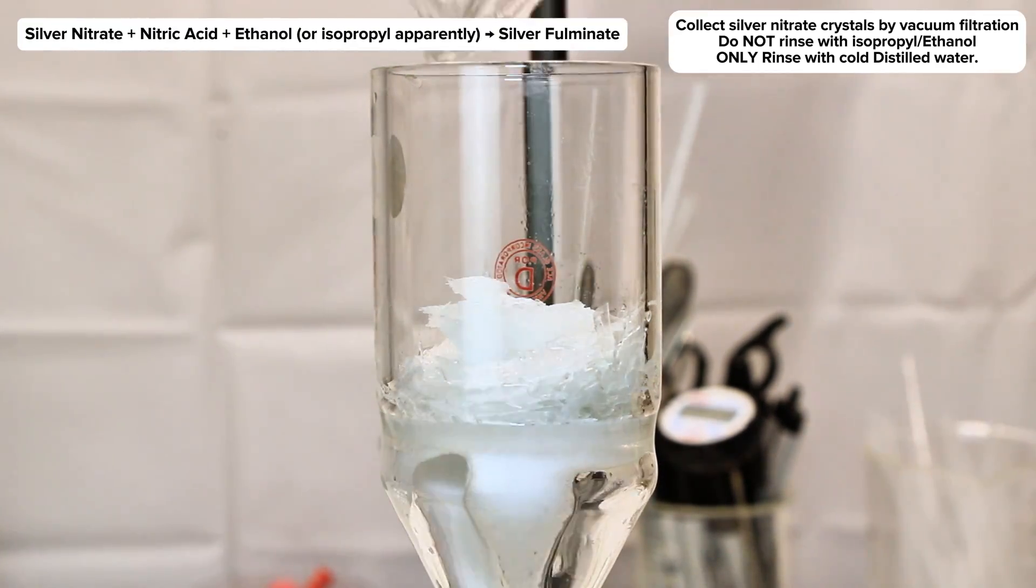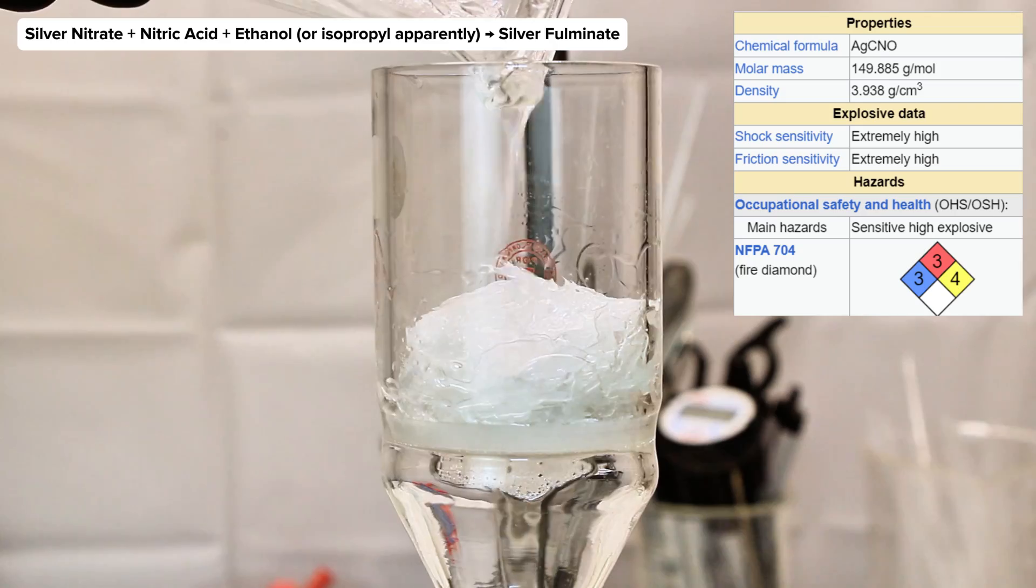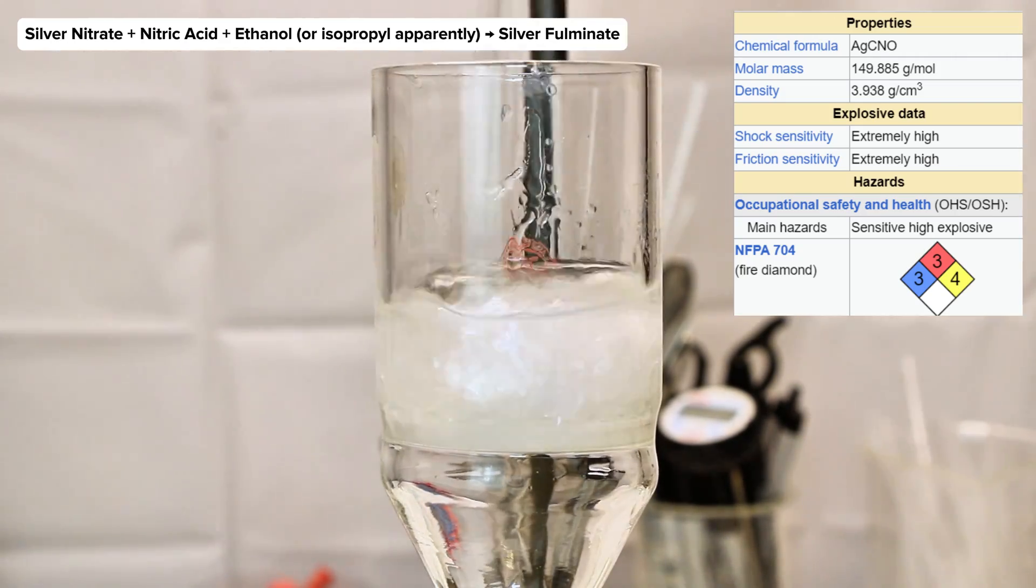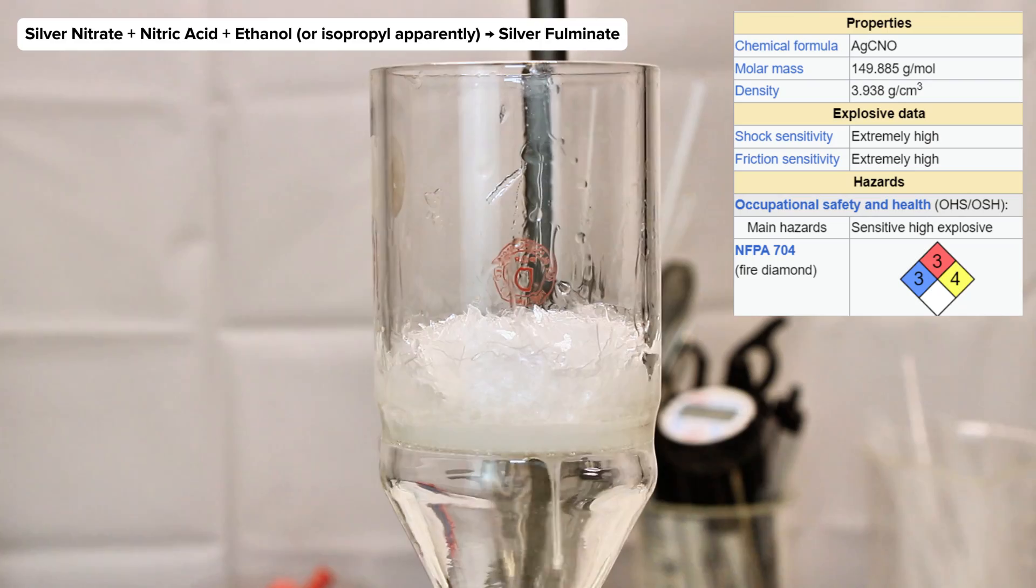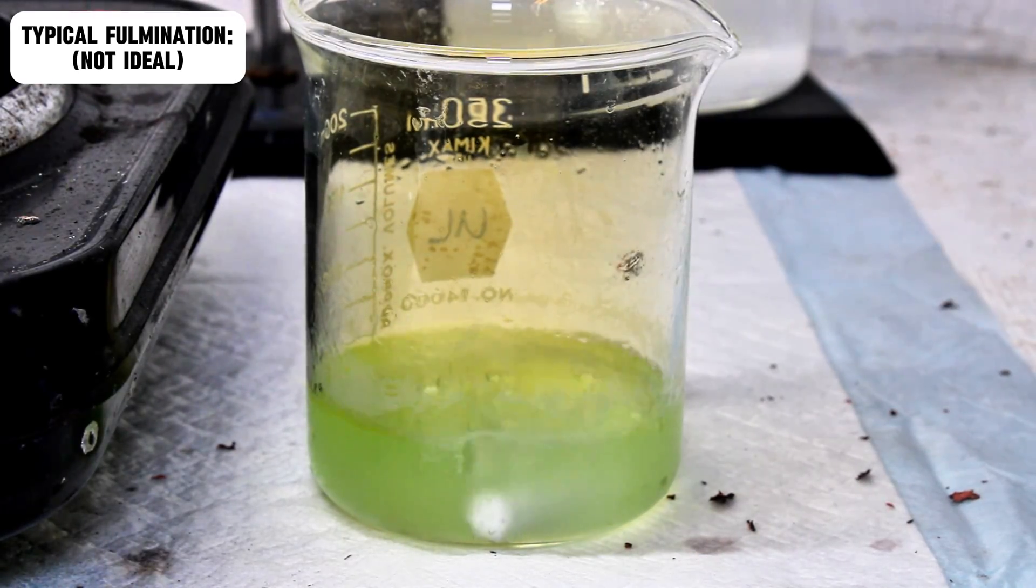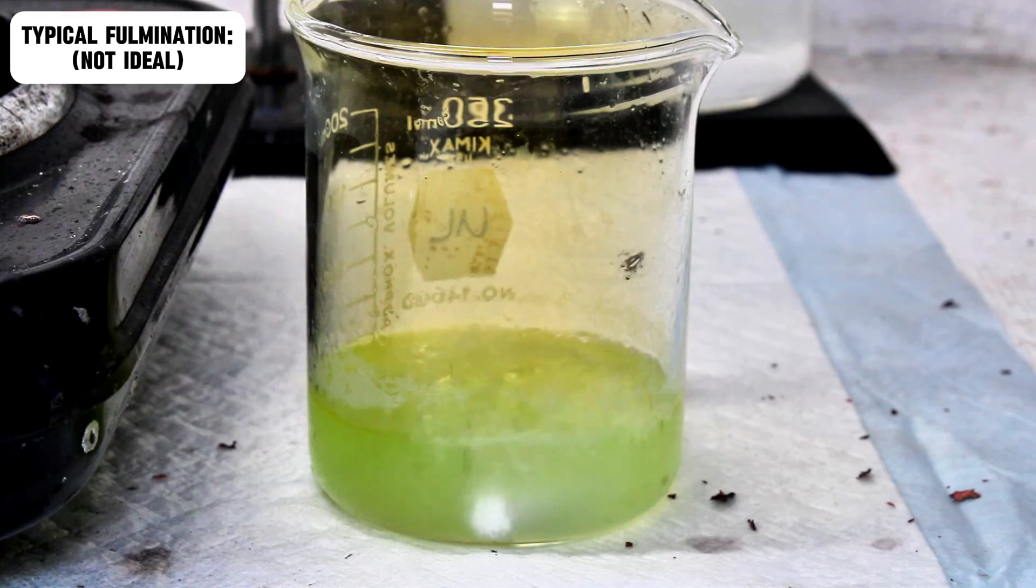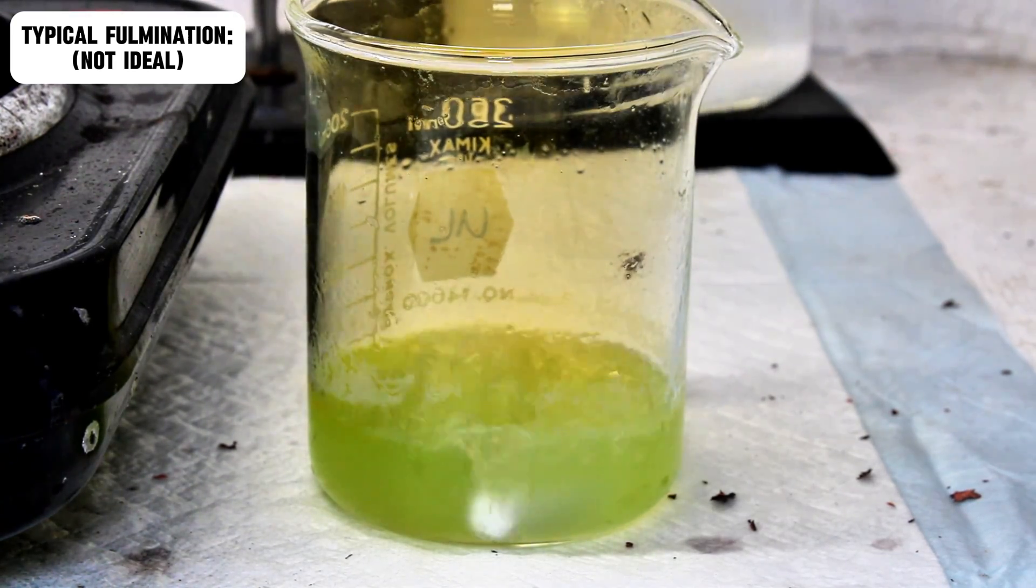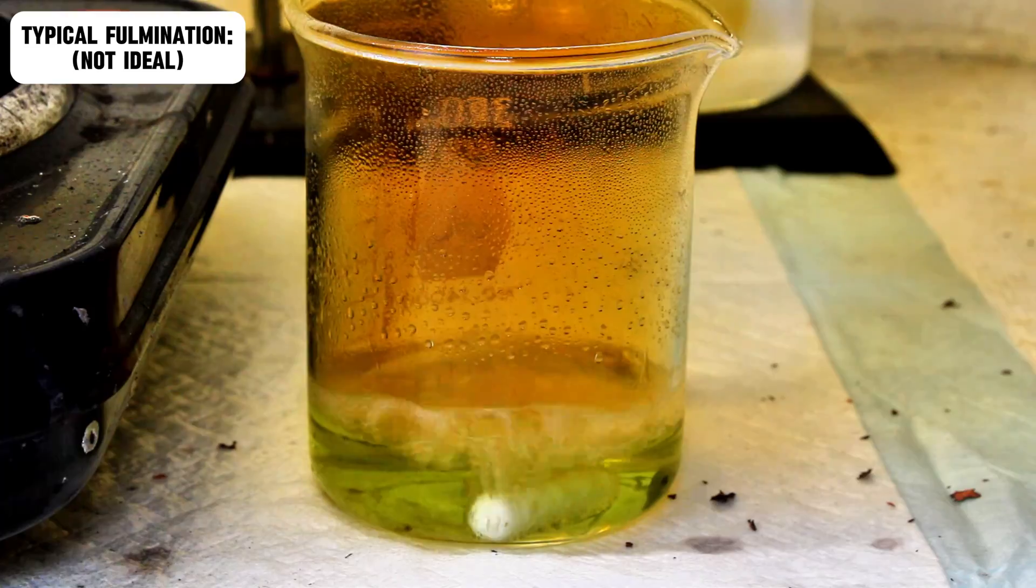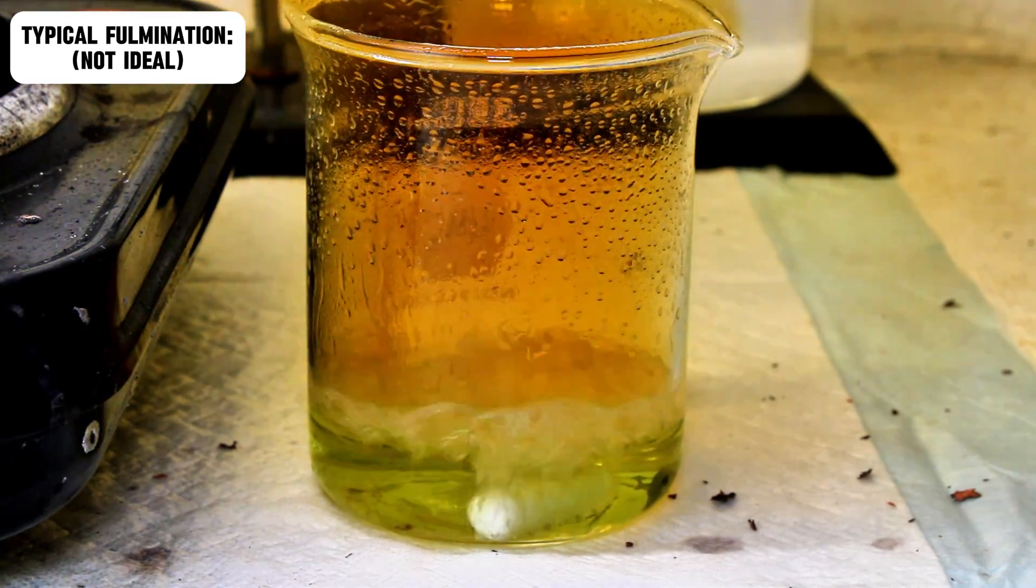I obviously knew this was a thing, I've done it several times intentionally, but what I was not aware of is how favorable this reaction was, or that it could proceed using isopropyl rather than ethanol, or at all in such a dilute solution. Turns out that it can. And that said, only about 5 minutes after rinsing my silver nitrate, the filtrate began a very characteristic fulmination. This was not desirable.